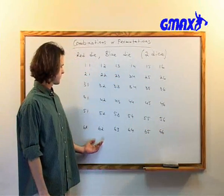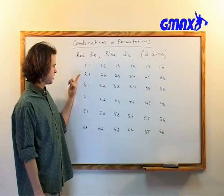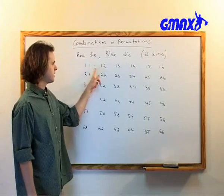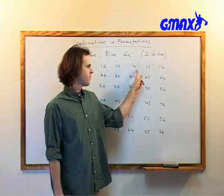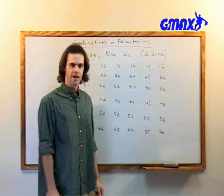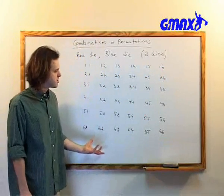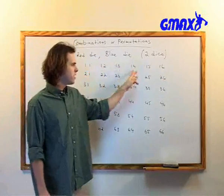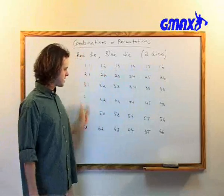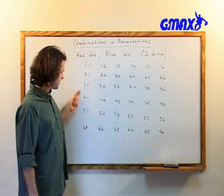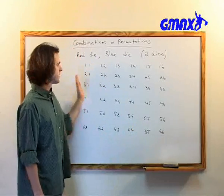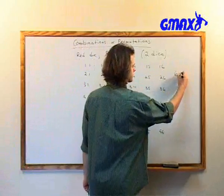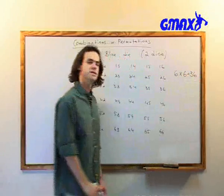Are there any other options? Either I get a one, a two, a three, a four, a five, or a six on the red die. And then I can get a one, a two, a three, a four, a five, or a six on the blue die. So there are no other options. There are no other results that I can get. And now I can count exactly how many options there are. I don't have to count one by one because I know that this is a square. I have six rows, six columns, so a total of 36 different results.